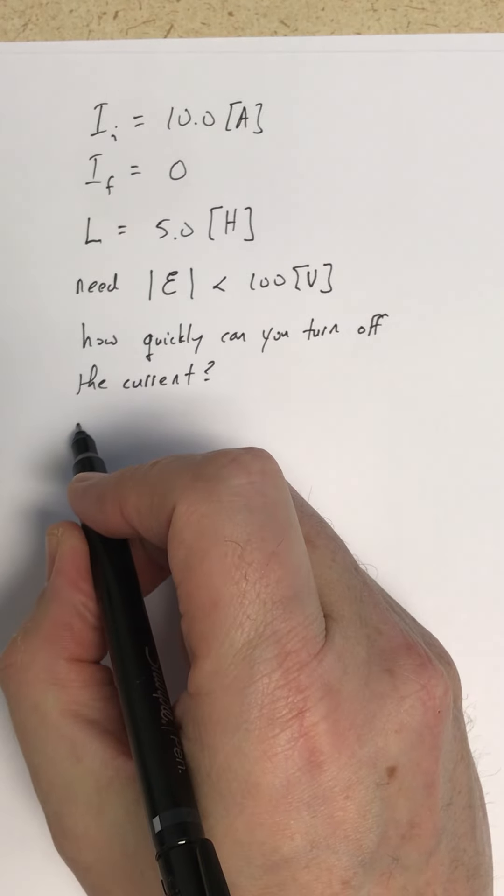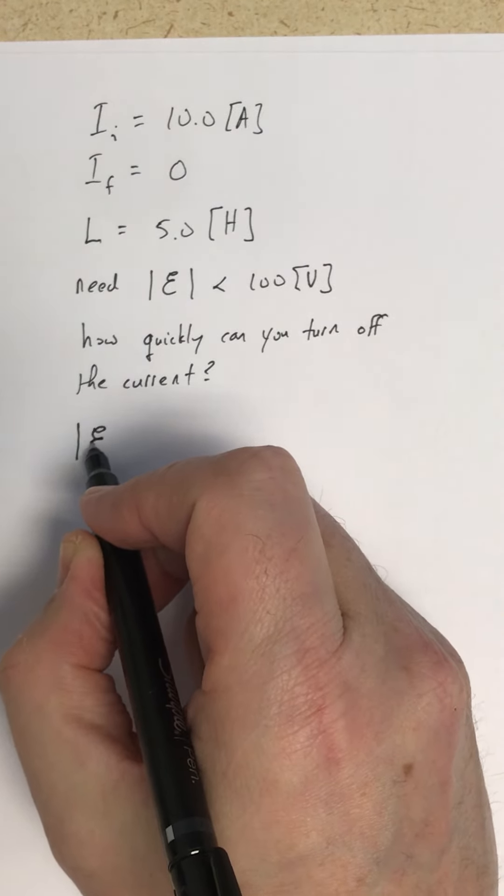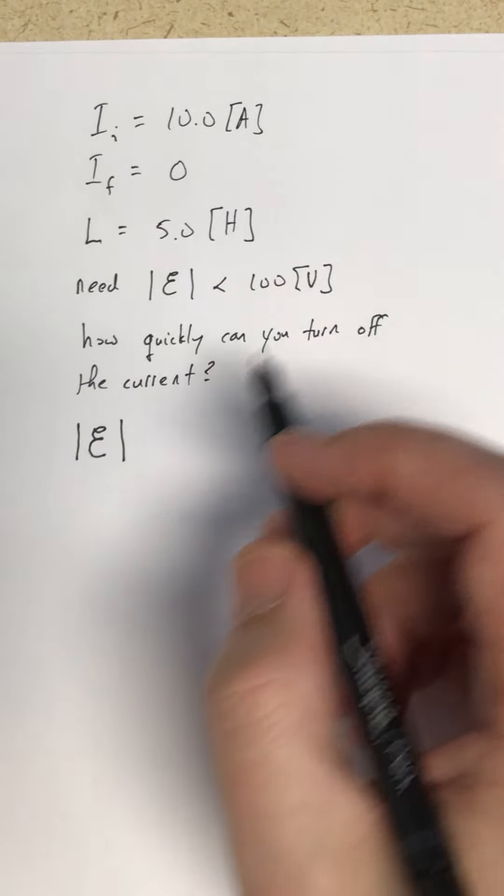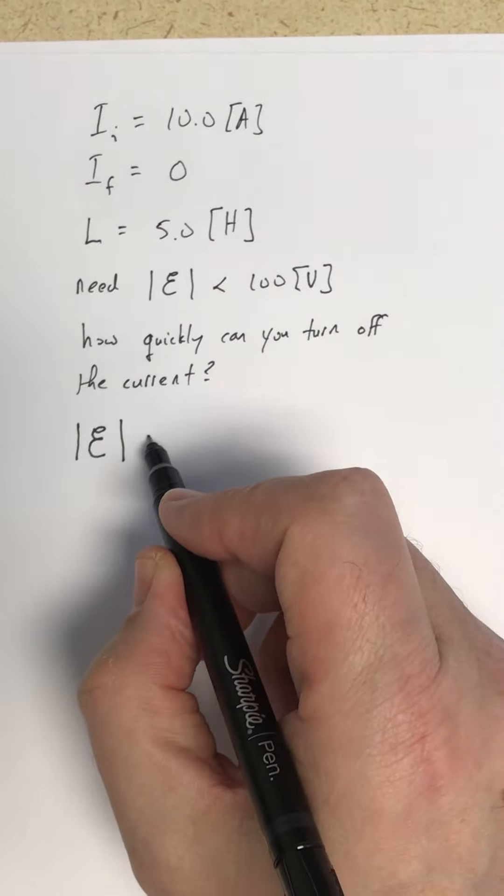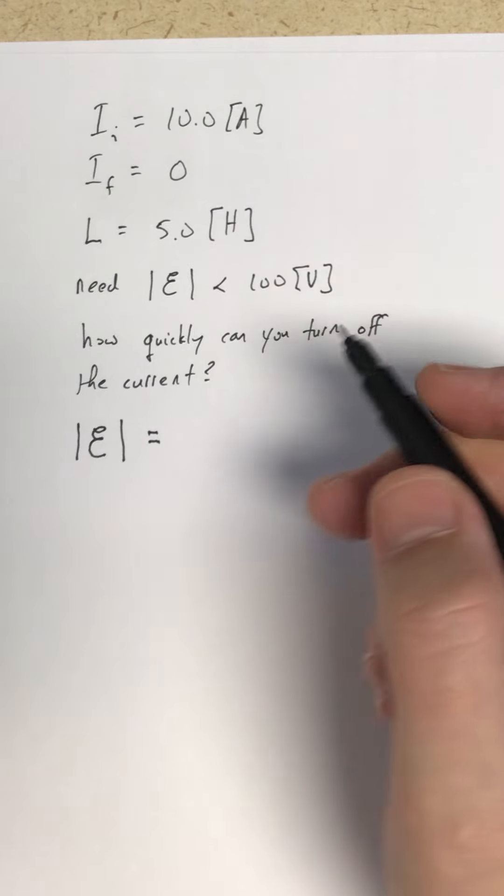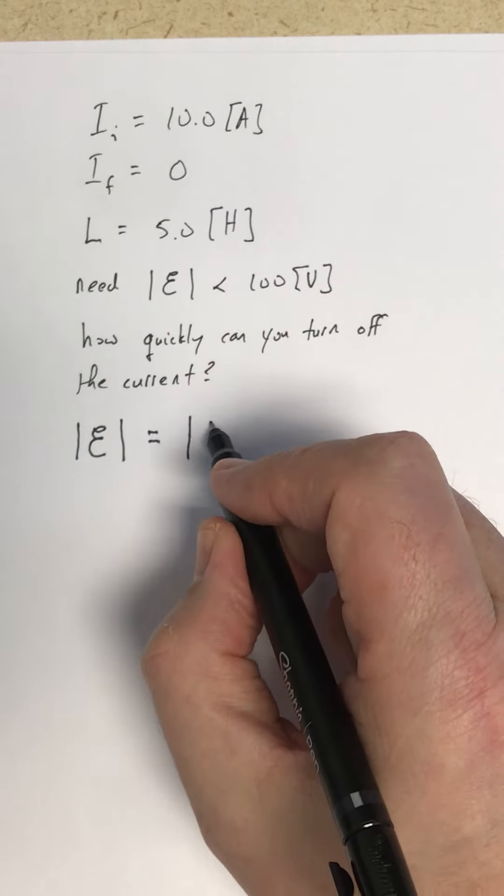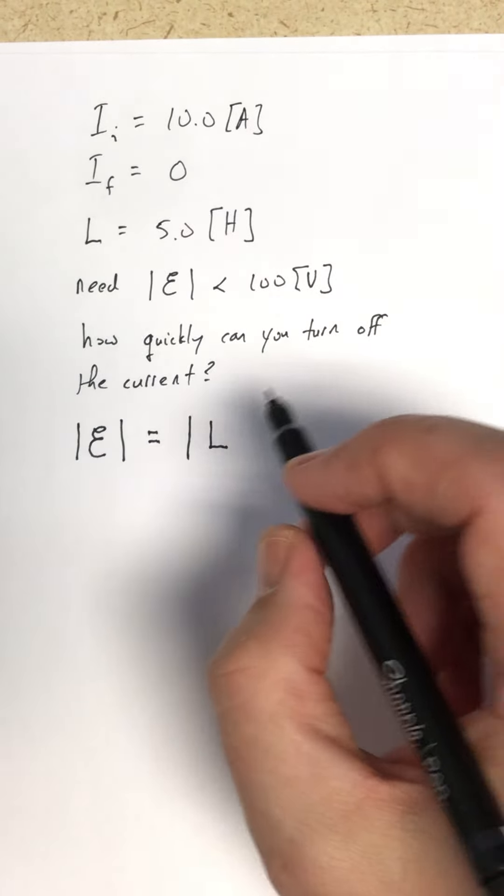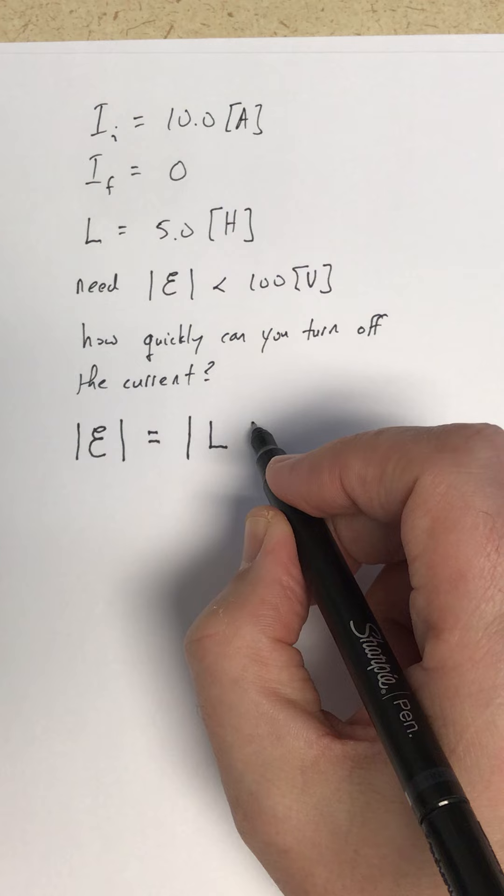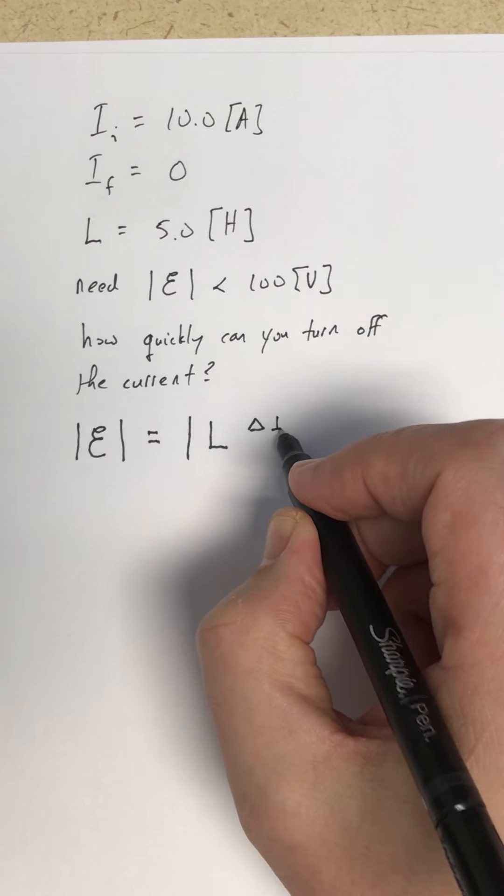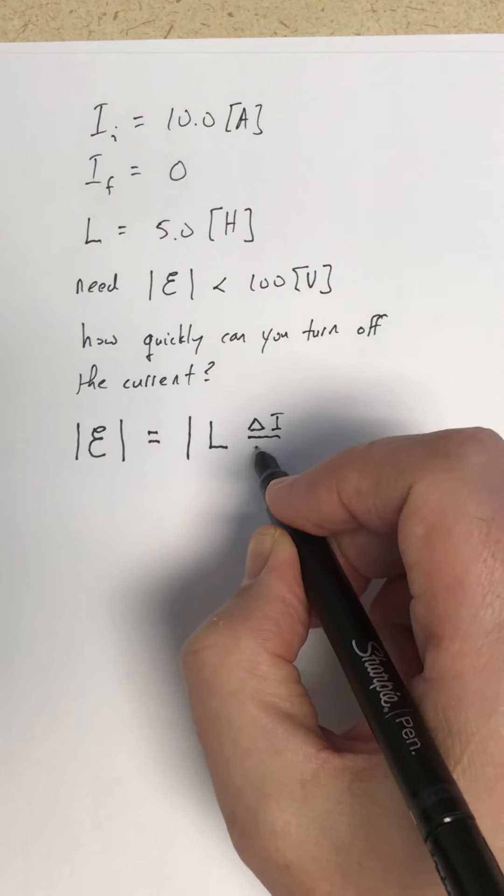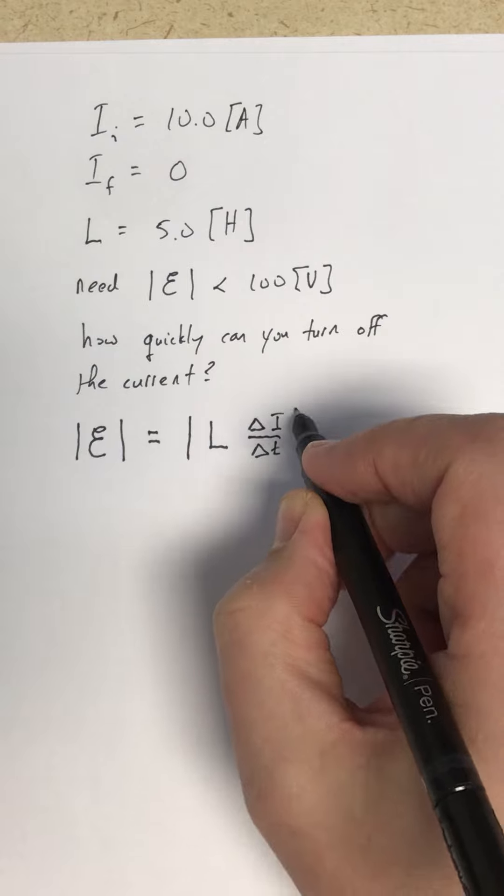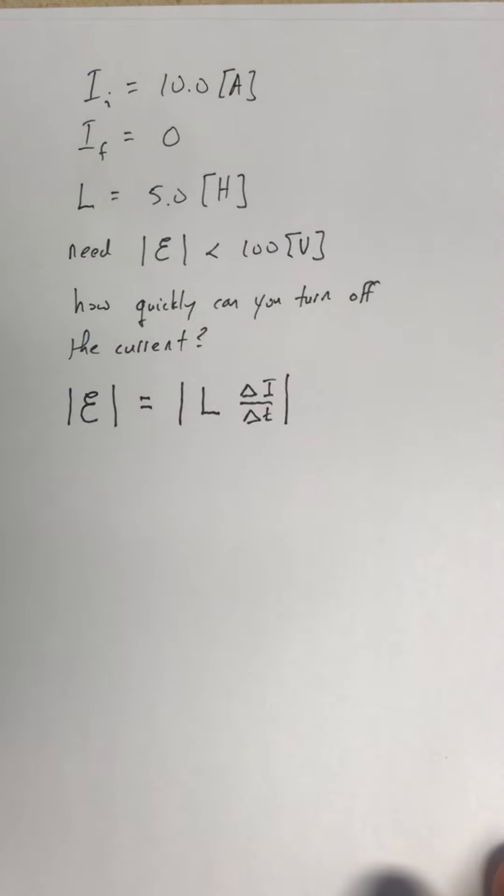So we use the magnitude of the EMF induced in the circuit, and we're ignoring the sign of whether it's a positive or a negative EMF. The inductance of the circuit L times the rate of change of the current.